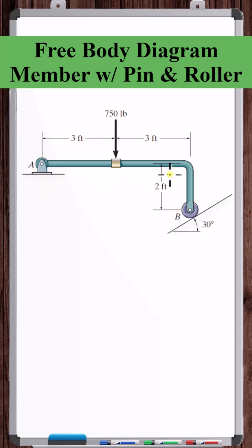Let's draw the free body diagram of this member here. So let's imagine we remove the member from the supports. We're not going to remove the wheel - we're going to leave the wheel attached - but we're going to remove the wheel from this support.